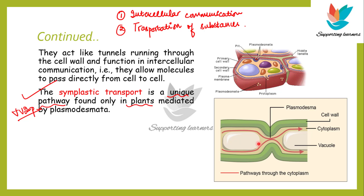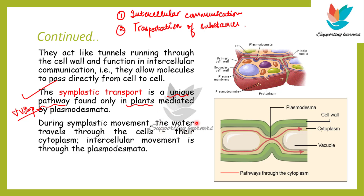Symplast is nothing but a cytoplasmic connection — a living connection between the two cells by means of the plasmodesmata. During this symplastic pathway, water travels through the cells; it is specifically a pathway for the transport of water. The intracellular movement of water from one cell to the other cell is through the plasmodesmata. So plasmodesmata have a very important role in the symplastic transport pathway. This was all about plasmodesmata.